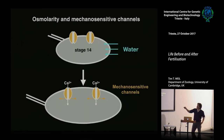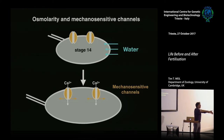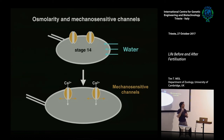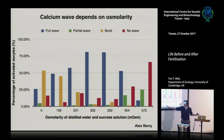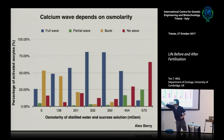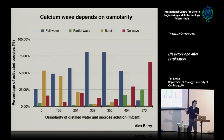We found evidence involving mechanosensitive channels — if water enters and swells the egg through osmolarity changes, this could open channels allowing calcium to flow in from the perivitelline space. Testing different osmolarity solutions, we found that at around 280-350 mOsm you see many full waves. At very low osmolarity, the predominant result is the egg bursting — it swells and explodes. At very high osmolarity, there's no wave because there's no swelling. This suggests a key osmolarity window enables swelling to open calcium channels.